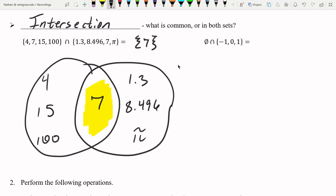Instead of drawing the Venn diagram, you can just look here. Well, we have 4, 7, 15, 100, 1.3, 8.496, 7, and pi. 7's in both, which means it's going to be in the intersection. Everything else is thrown away. We do not care about anything else.